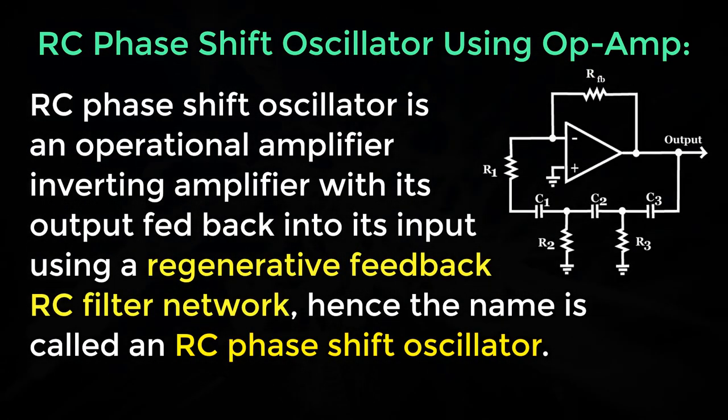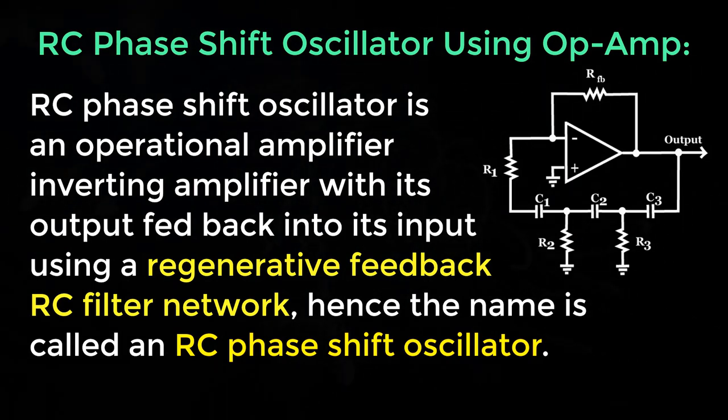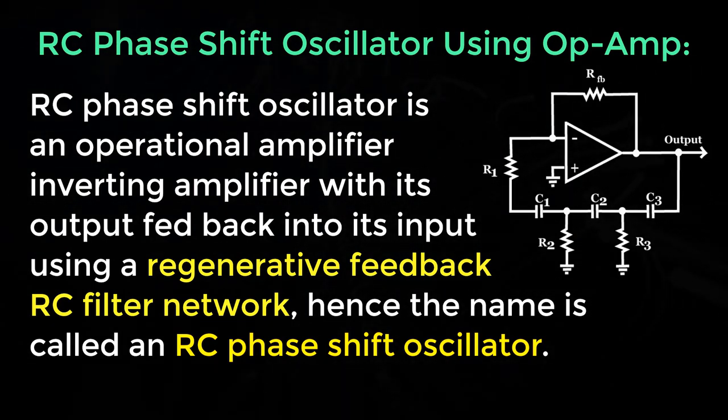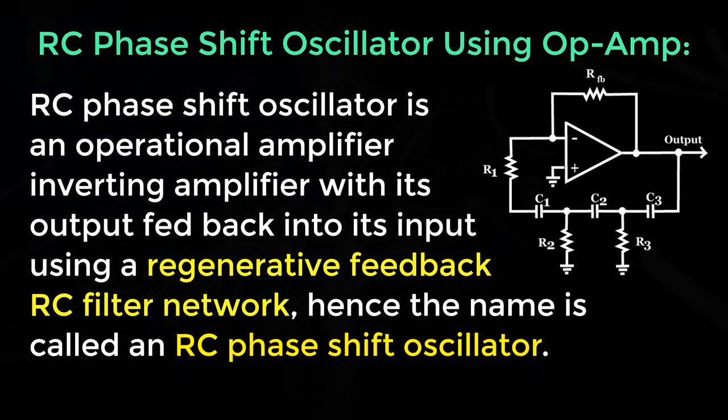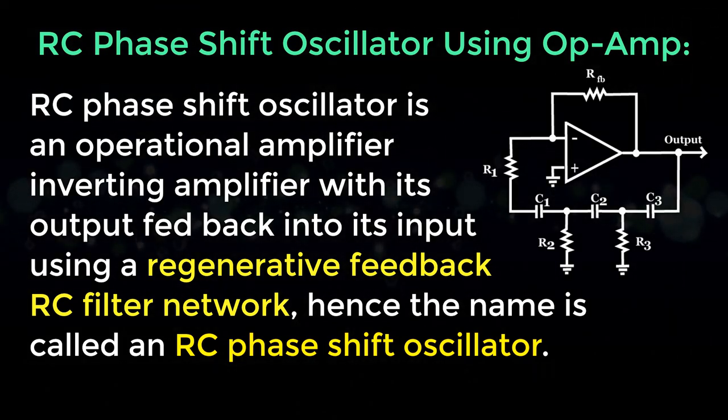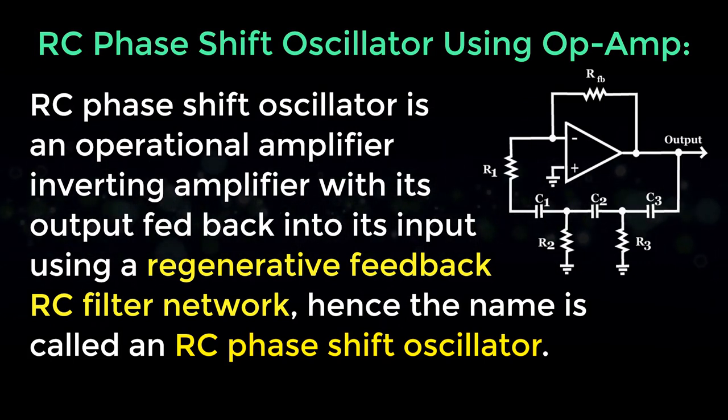The essential component used in RC phase shifter oscillator is an operational amplifier, inverting amplifier with its output fed back into its input using a regenerative feedback RC filter network. Hence the name is called an RC phase shifter oscillator.